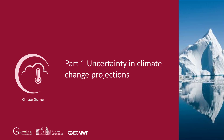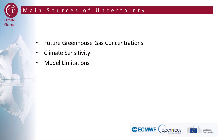This is part one of the uncertainty and confidence lesson. In this part, we talk about uncertainty in future climate change projections. The main sources of uncertainty are the future greenhouse gas concentrations, the climate sensitivity, and the model limitations.